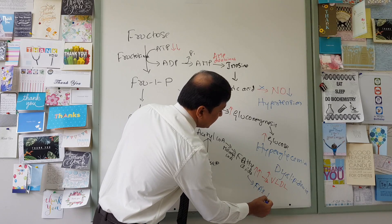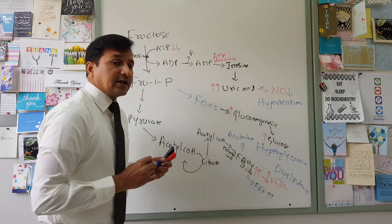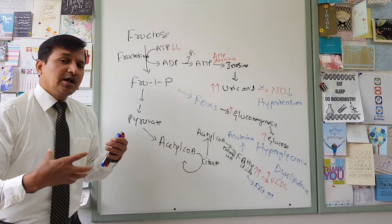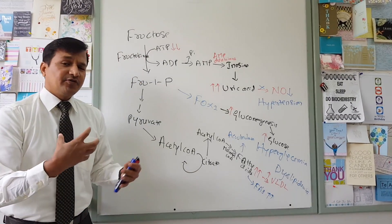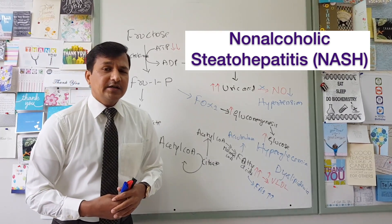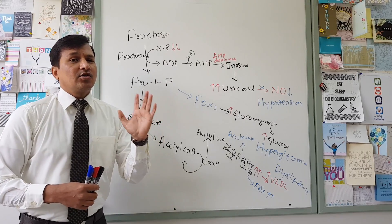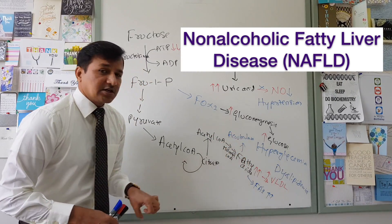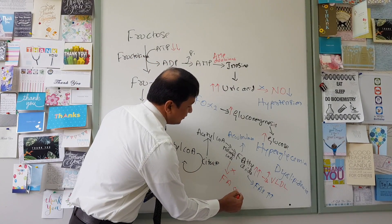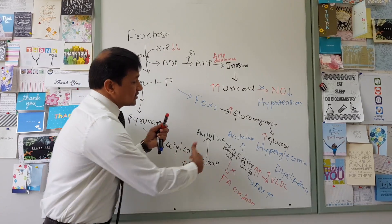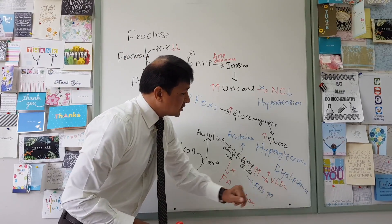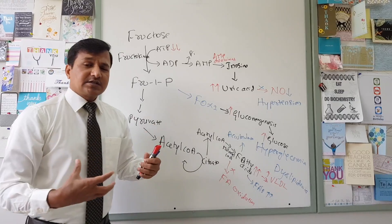Fatty acids also flood into the blood and accumulate in the liver, giving rise to hepatic steatosis — the accumulation of excess fatty acids in the liver. This eventually triggers an inflammatory process, progressing to non-alcoholic steatohepatitis (NASH). Furthermore, malonyl-CoA — an intermediate in fatty acid synthesis — inhibits fatty acid oxidation, so the liver is not properly burning fatty acids, only accumulating them.